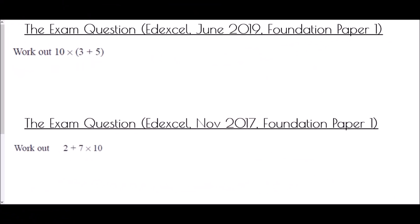We'll end with exam questions from two different foundation paper ones — both non-calculated, because if they were calculated you could just type it in and get the answer. From June 2019: work out 10 × (3 + 5). This is a clear indication to think about BIDMAS — we have multiplication, addition, and brackets in one question. Starting with brackets: 3 + 5 = 8, then 10 × 8 = 80.